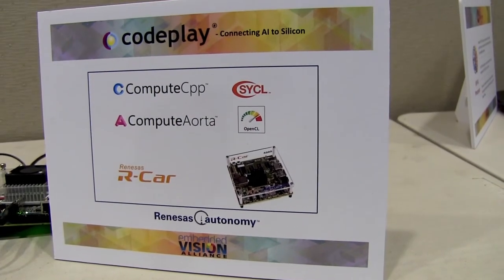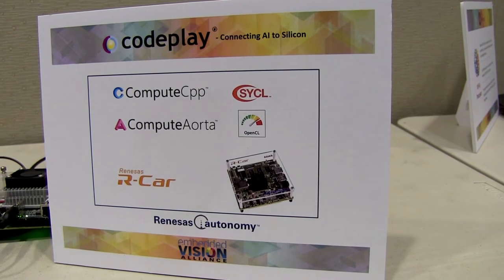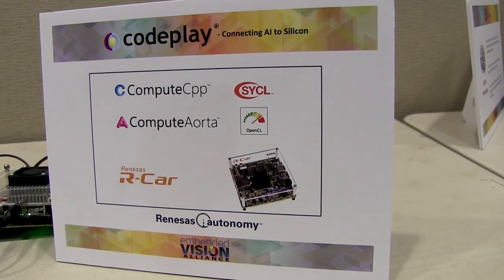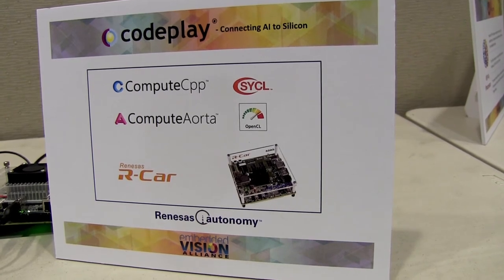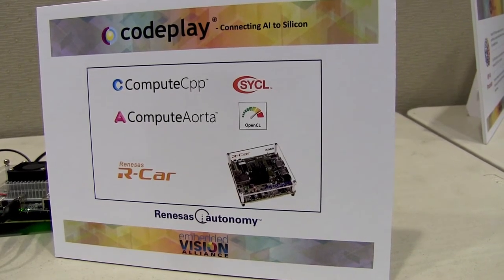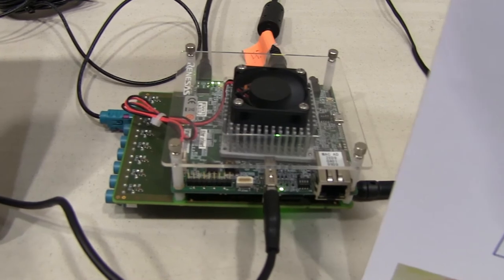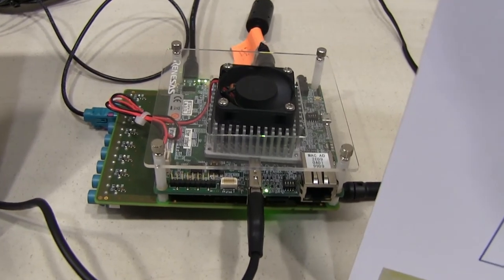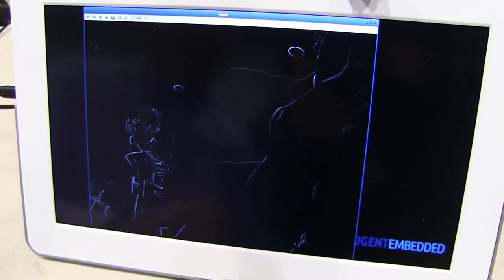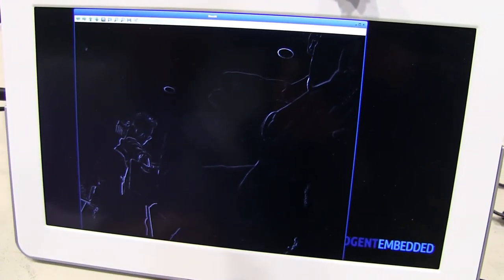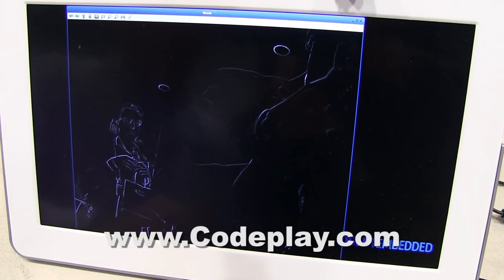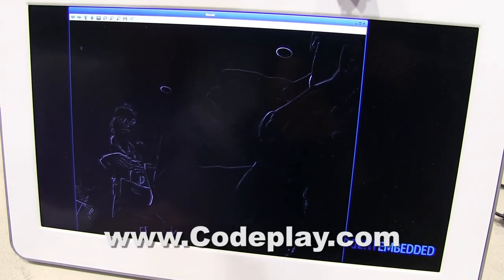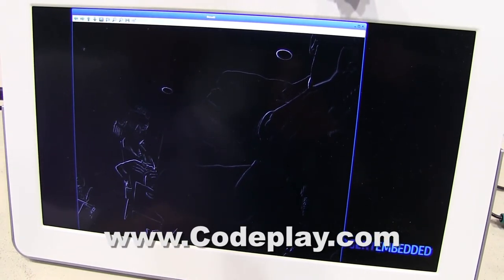Here you've got the Renesas R-Car — it's the H3 development board. We enable that board's processors with OpenCL, and we can put SYCL on top of that. OpenCL and SYCL are both open standards by Khronos. It's outputting over HDMI to the screen here, and what it's running is a Sobel edge detection filter. That filter is just straight running C++ through OpenCL and SYCL on the Renesas R-Car board.